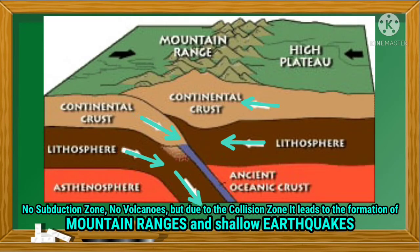In the last type of convergent plate boundary, where two continental crustal plates collide, there is no subduction zone. Therefore, no volcanoes form, but rather a collision zone happens that creates mountain ranges and shallow earthquakes.